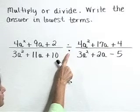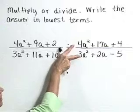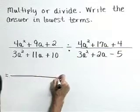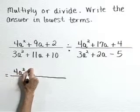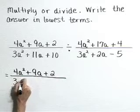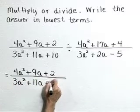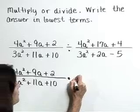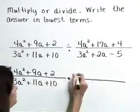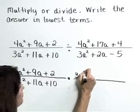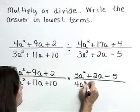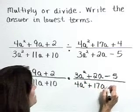Let's start by turning this division problem into a multiplication problem by multiplying by the reciprocal of the divisor. So this becomes 4a squared plus 9a plus 2 over 3a squared plus 11a plus 10 times, now our second rational expression after we flip it, that becomes 3a squared plus 2a minus 5 over 4a squared plus 17a plus 4.